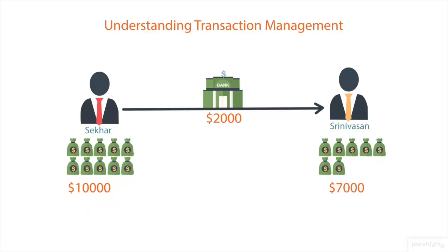Now assume that the transaction to withdraw the amount from Shekhar is successful and the transaction to deposit the amount to Srinivasan is a failure. Then we can observe that the amount is deducted from Shekhar's account but the amount is not deposited to Srinivasan, which creates lots of problems. To overcome this, we need to use transaction management.